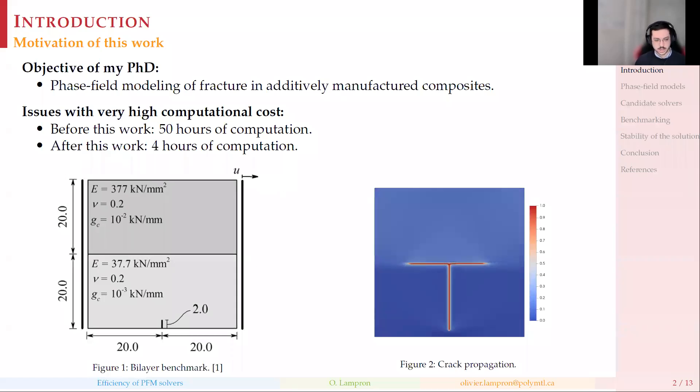The actual objective of my PhD is to predict the fracture behavior of 3D printed composites. But since it's a very complex problem with the structure of the composites and its anisotropic behavior, we decided to use a very powerful method, which is called the phase field method. However, it has one main drawback, which is the computational cost. For example, if we look at a very simple benchmark, we have a square plate that is made of two different materials.